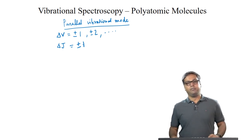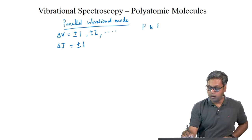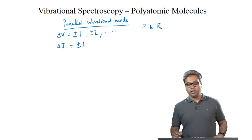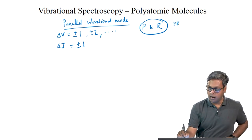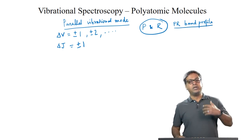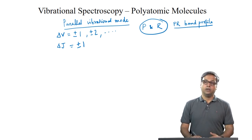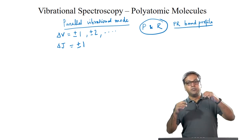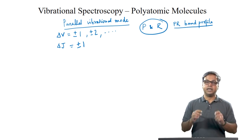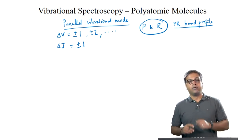So we get a spectrum with a similar appearance to that of diatomic molecules — we get P and R branches appearing in the ro-vibrational spectrum. This is known as the PR band profile, just as we saw for HCl. For HCl, there was a gap in the middle of the vibrational band where ΔJ = 0, because that transition is not allowed for a parallel vibrational mode.